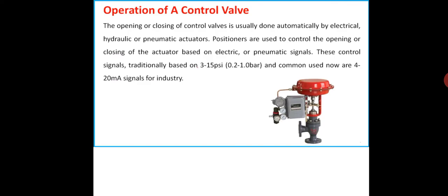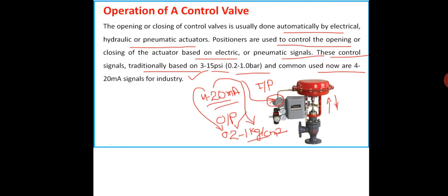There is a standard signal convention followed globally. The control signal is traditionally based on 3 to 15 PSI, which corresponds to 0.2 to 1.0 bar (or kg/cm²). Currently the common standard is 4 to 20 milliampere — 4 mA corresponds to 3 PSI (0.2 kg/cm²), 20 mA corresponds to 15 PSI, and 50 mA corresponds to 1.0 bar or 1.0 kg/cm².